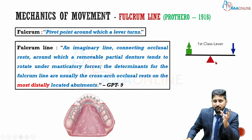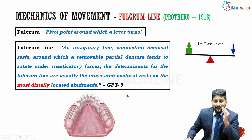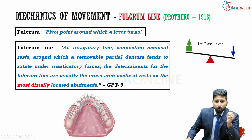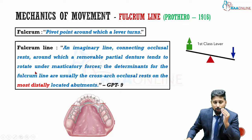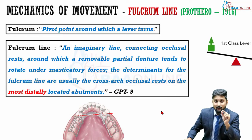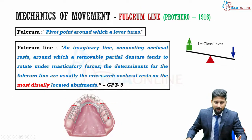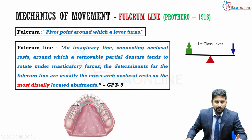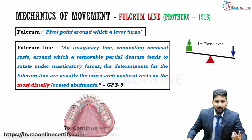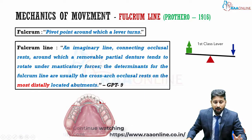The fulcrum line in relation to a removable partial denture is defined as an imaginary line connecting the occlusal rests around which the RPD tends to rotate under masticatory forces. The rests act as fulcrum points. The determinants for the fulcrum line are usually the cross-arch occlusal rests on the most distally located abutments. In a Kennedy Class I situation, the most distally located abutments have distal rests, and the fulcrum line connects both of these distal rests. All movements of the RPD occur around this fulcrum line.